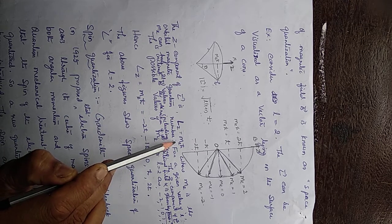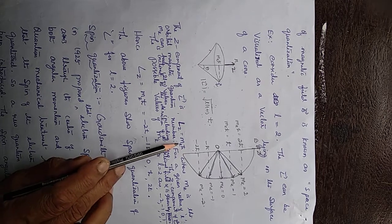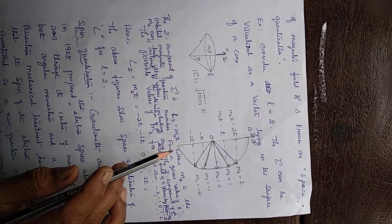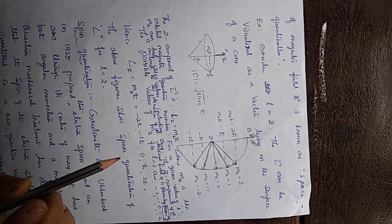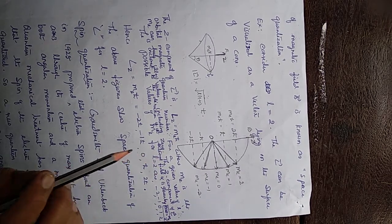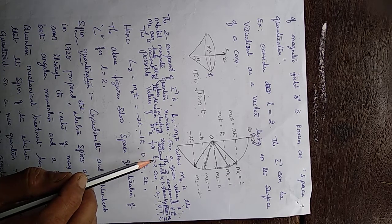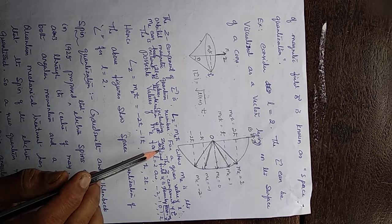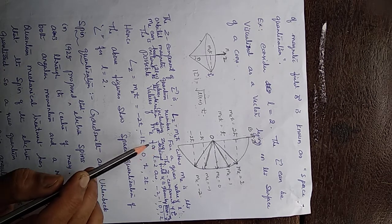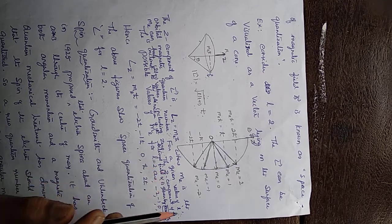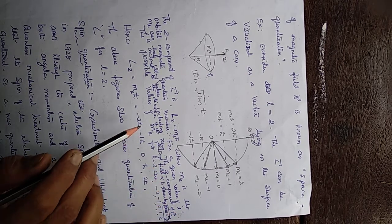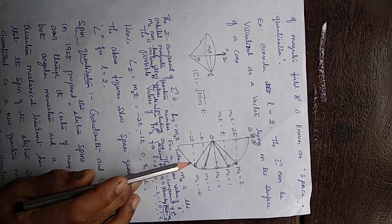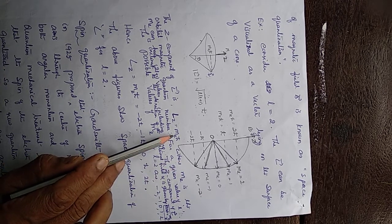M_L is called the orbital magnetic quantum number. M_L can have 2L plus 1 values for a given L. L is the orbital quantum number. When the electron revolves in a given orbit, its sub-level is designated by quantum number L. The levels are denoted as S, P, D, F and so on, and L takes values 0, 1, 2, 3 up to n minus 1. So for a given L, M_L can have 2L plus 1 values.